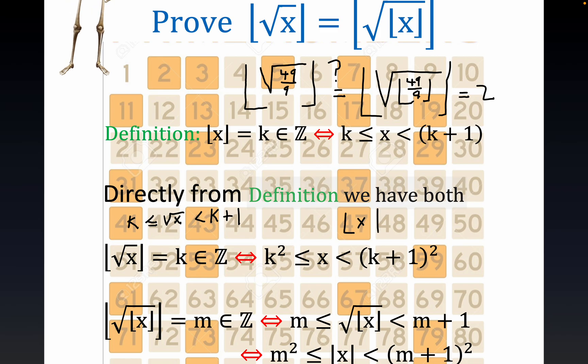This statement right here says that the floor of x—not the square root of x, but the floor of x—is equal to k². That's a conclusion just directly from the definition.